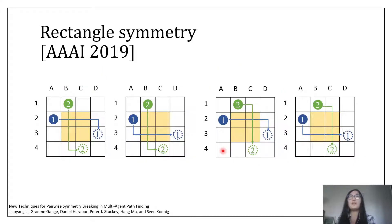However, in our last year's work, we showed that CBS actually suffers from rectangle symmetry. If we think about this example carefully, actually each agent has multiple shortest paths to reach its goal location. However, every combination of these shortest paths collides somewhere inside this yellow area.